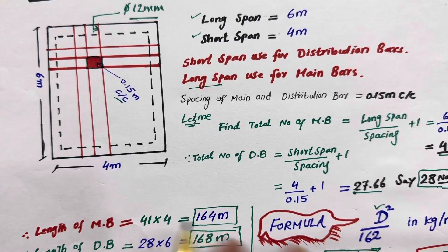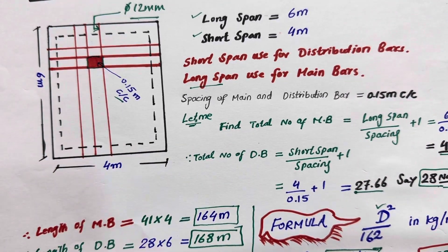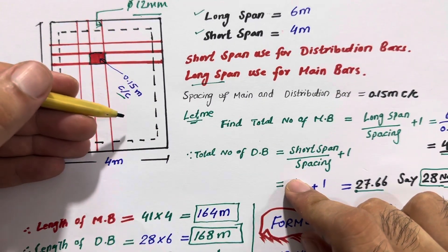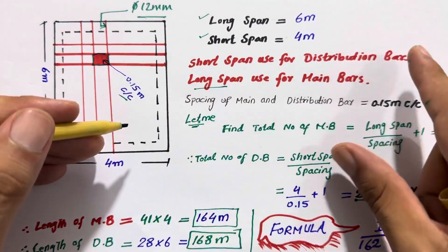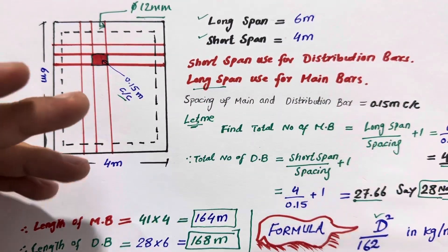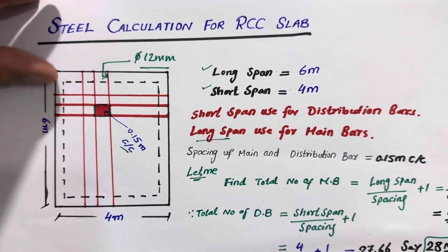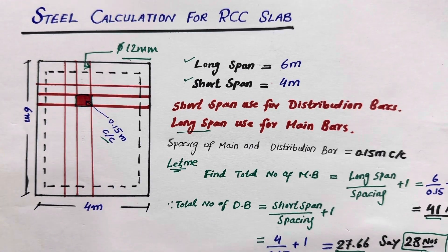We don't have any crank bars or extra steel rods in this calculation. For a two-way slab, at the end of the beam or support there is a negative bending moment, and to resist it we provide crank bars or extra steel rods. Each extra bar should be L divided by 4 in length. This is the simple way to find the weight of steel for an RCC slab for main bars and distribution bars. Thanks for watching — see you in the next video.